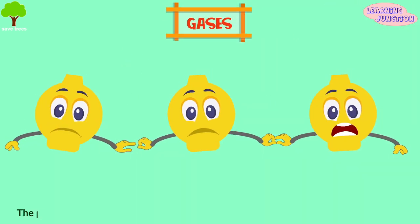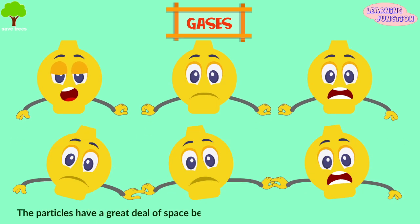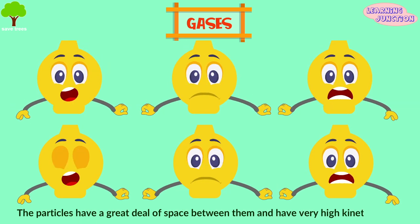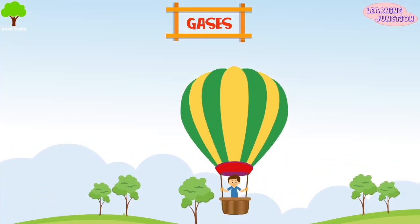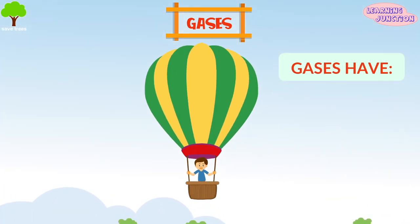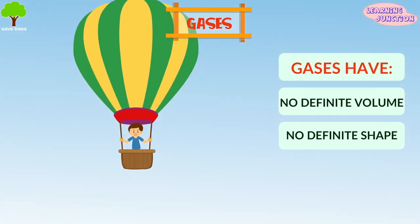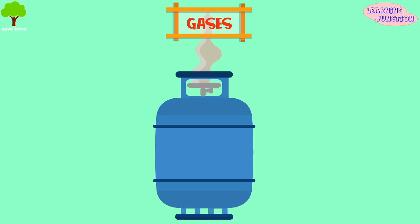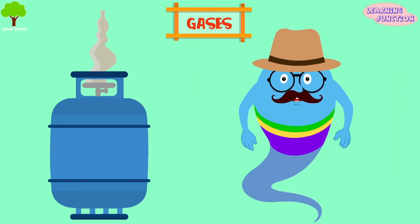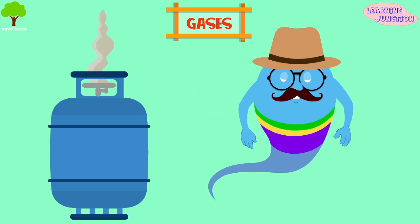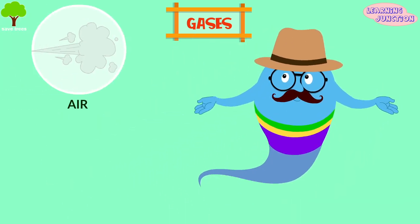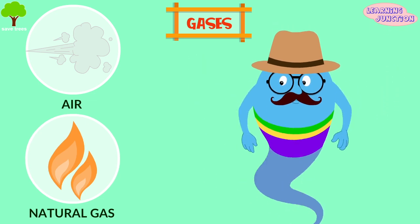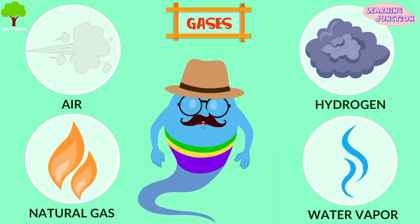Gases. In this state, the particles have a great deal of space between them and have very high kinetic energy. A gas has no definite volume or shape. Gases can fill up the entire volume or space of a container, irrespective of the size of the container. Some examples include air, natural gas, hydrogen, and water vapor.